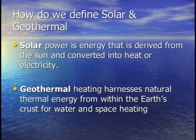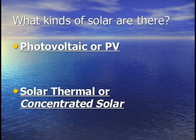We're going to start by defining solar. For our purposes today, we're going to define solar as the energy that is derived from the sun and converted into heat or electricity. There are two types of solar applications we're going to talk about: the first being photovoltaic, or PV, and the second being solar thermal or concentrated solar.